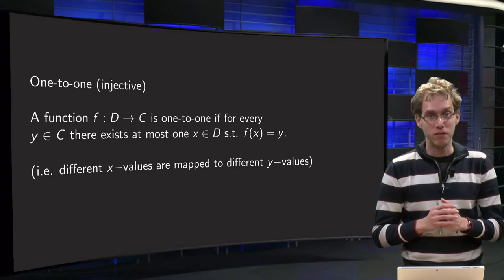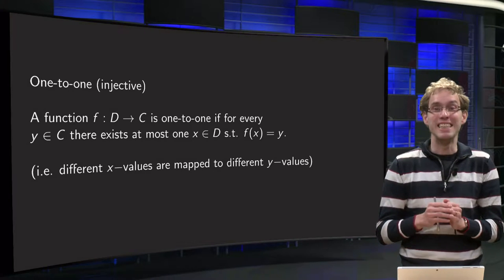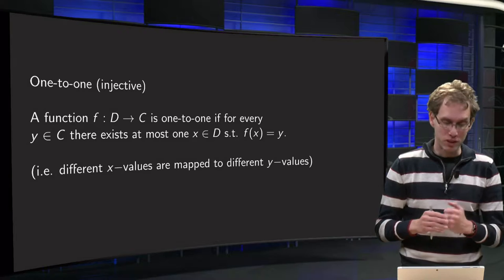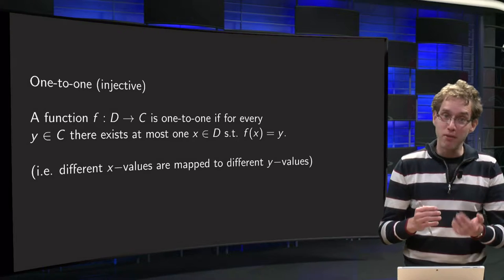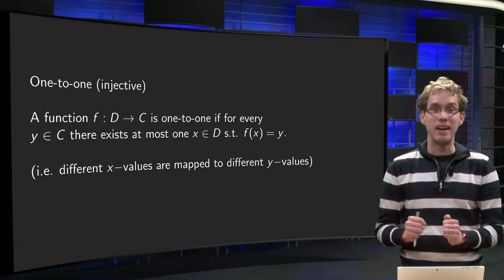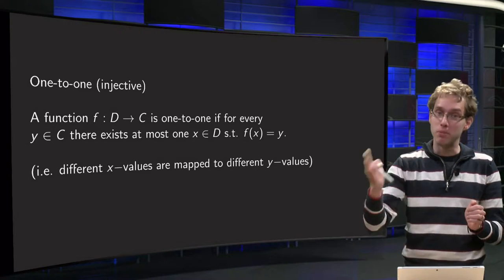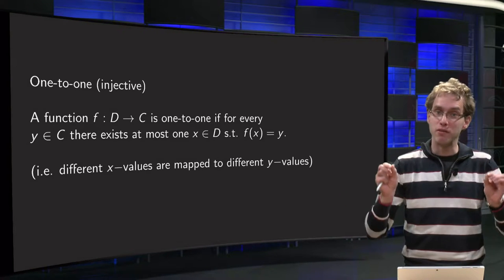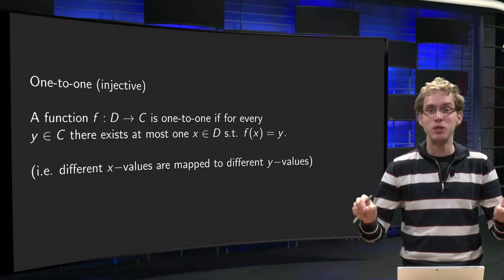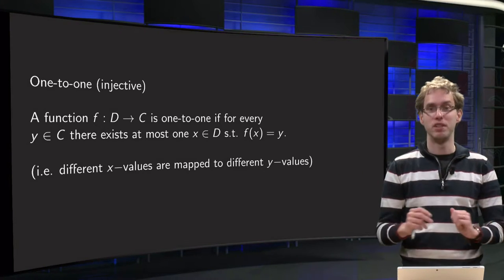So what is the definition of one-to-one, or a nicer word maybe, injective? A function f from D to C is one-to-one if for every y in the codomain, there exists at most one x in the domain which is mapped to this particular y. So it is not possible to have different x values in the domain be mapped to the same y in the codomain, for all points in the codomain.